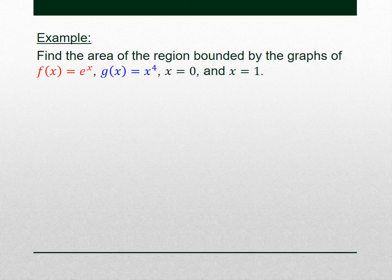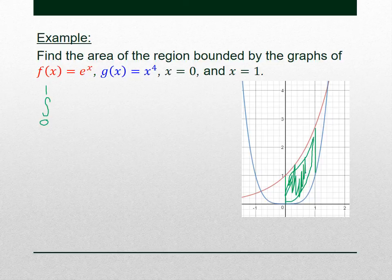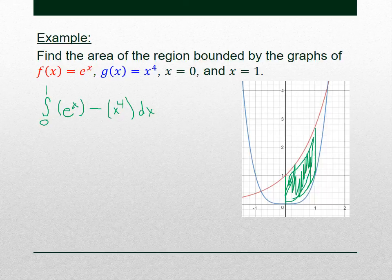We're talking about the area between two graphs, so it's a definite integral. Since we're going from 0 to 1, we take the definite integral from 0 to 1. We need to do top minus bottom, so we need to figure out which one is on top. Looking at the graphs from x = 0 to x = 1, the red guy is on top. The red guy was e^x, so the top guy is e^x. The bottom guy was the blue g(x) = x^4.